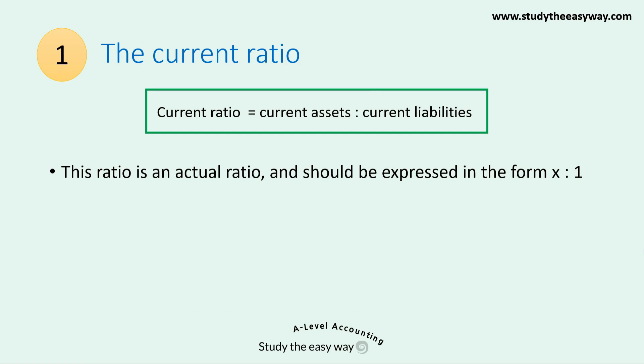Let's start with the current ratio. The current ratio compares current assets to current liabilities. The two dots in the middle mean 'compared to', sometimes abbreviated to the word 'to'. This is an actual ratio and should be expressed in the form X to 1, where X is a number.